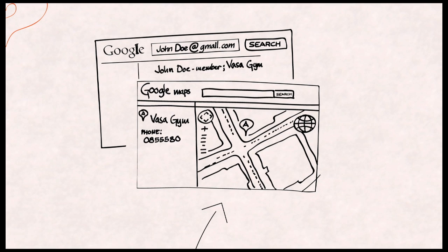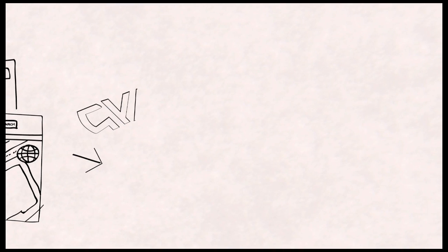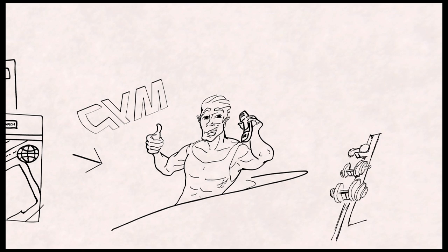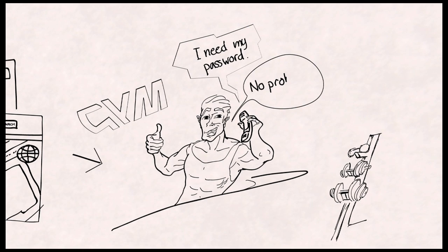After that, a simple phone call is all it takes to get hold of your password. The caller pretends to be you and says he's forgotten his password to the gym's online booking system. A service-minded receptionist who wants to help gives out your password to the caller. If it's the same password you normally use online, it means that the caller now has access to most of your online accounts.